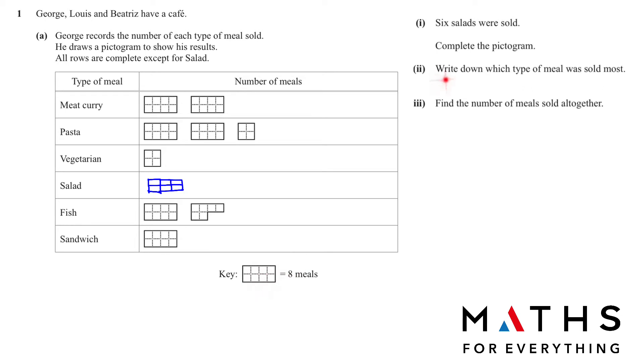Understanding the key is important. Write down which type of meal was sold most. You can see here this is eight plus eight plus four, so pasta. Find the number of meals sold altogether. We have to write down all the meals. We know that one rectangular box is equal to eight. So eight plus eight is sixteen, and here we have eight plus eight plus four, this will give us twenty. Then vegetarian is four, salad is six, fish is eight plus one two three four five six, we're just counting the number of boxes, and sandwiches. Add them all together and the answer is 68.